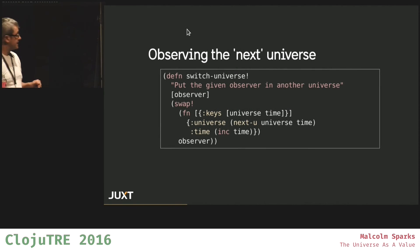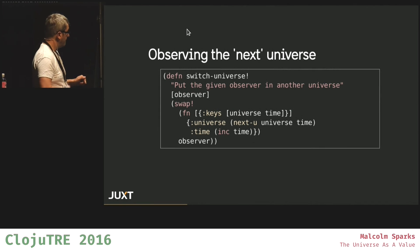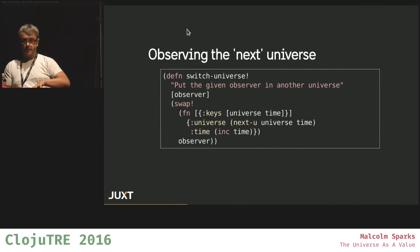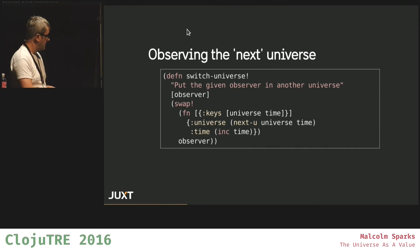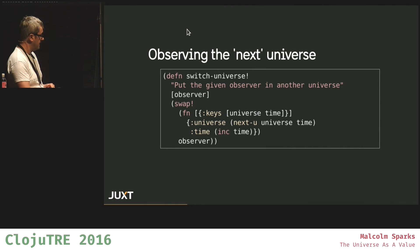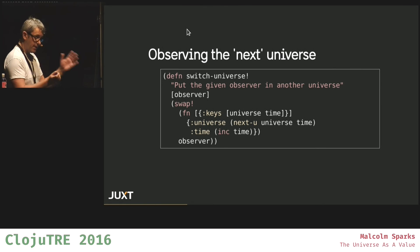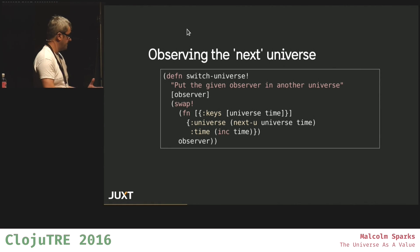This next piece of code here is switching the observer from one universe to another. Now we have our next universe. We destructure the atom and we get the universe and the time for the observer. And then we increment the time, but also work out the next universe, and that becomes the next frame that the observer sees — the next value that goes into the atom.